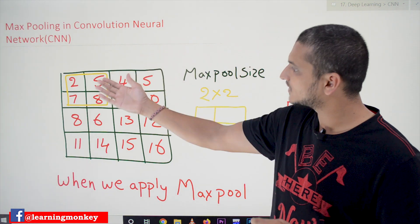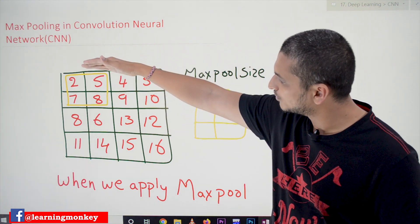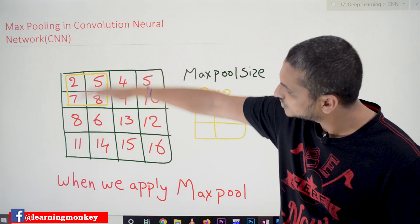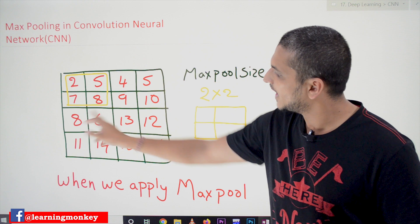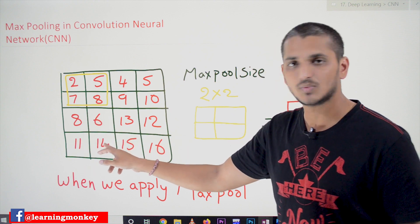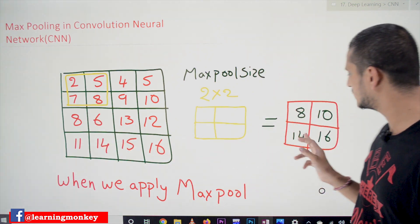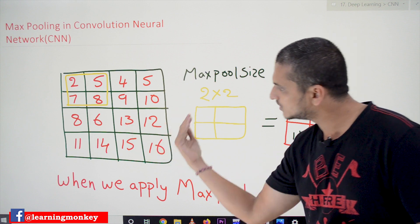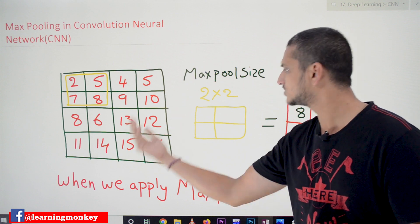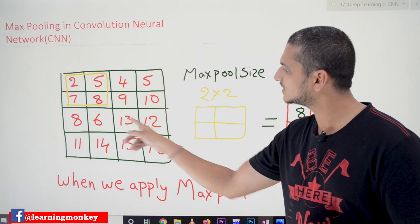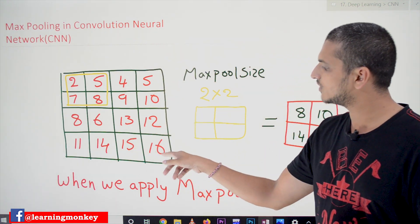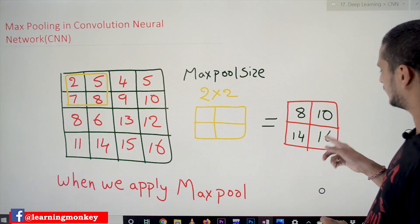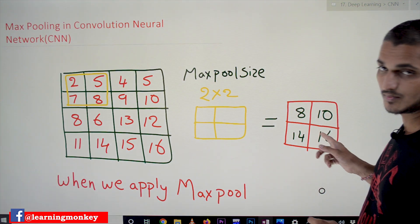After that, stride equal to 2 means we go two steps down. The next window covers 8, 6, 11, 14. Out of these, the maximum is 14, so we consider 14. Next, stride equal to 2 moves two steps to the right, covering 13, 12, 15, 16. Out of these, 16 is the maximum, so we take 16.